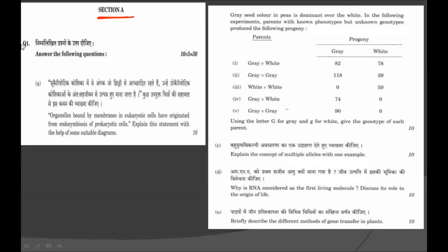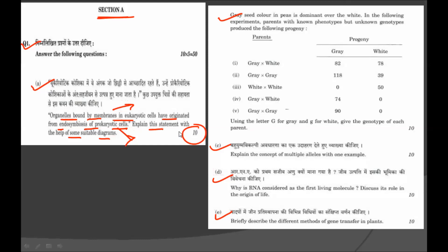This is Section A, Question number 1, divided into 5 parts: A, B, C, D and E. The first sub-question states that organelles bound by membranes in eukaryotic cells have originated from endosymbiosis of prokaryotic cells. You have to explain this statement with a suitable diagram — how membrane-bound organelles originated from endosymbiosis of prokaryotic cells.